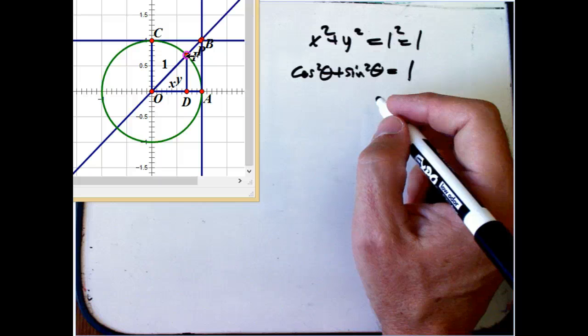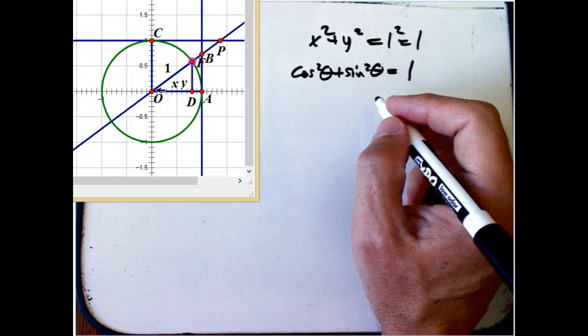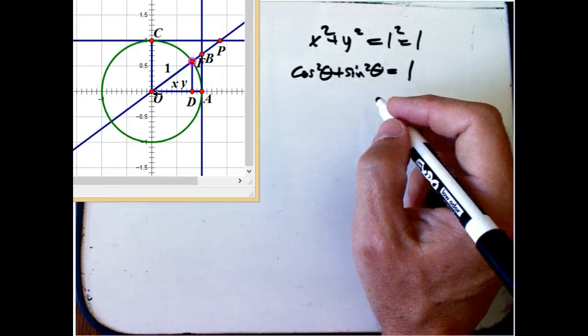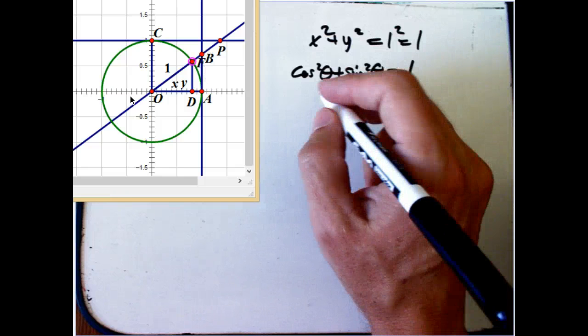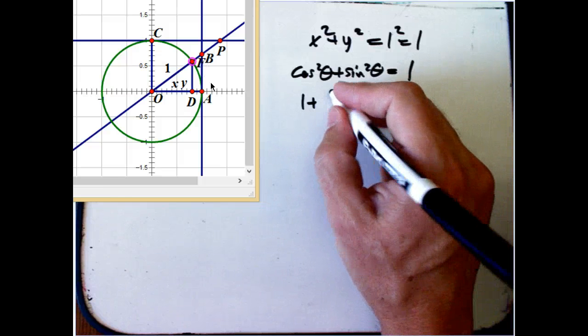And then the even more interesting thing was there are a couple of other triangles. There's OAB and COP, and those turned out to contain the other four trig functions as lengths. And OAB turns out, well, OA is one, because it's the unit circle, and AB was tangent theta.